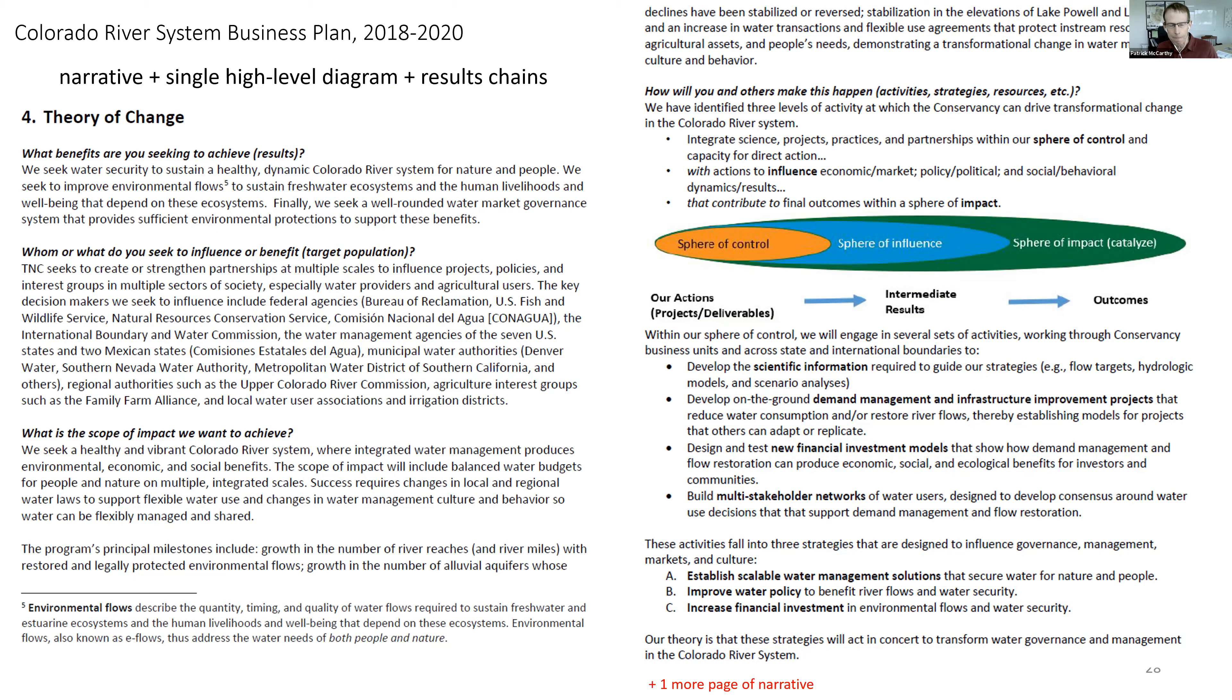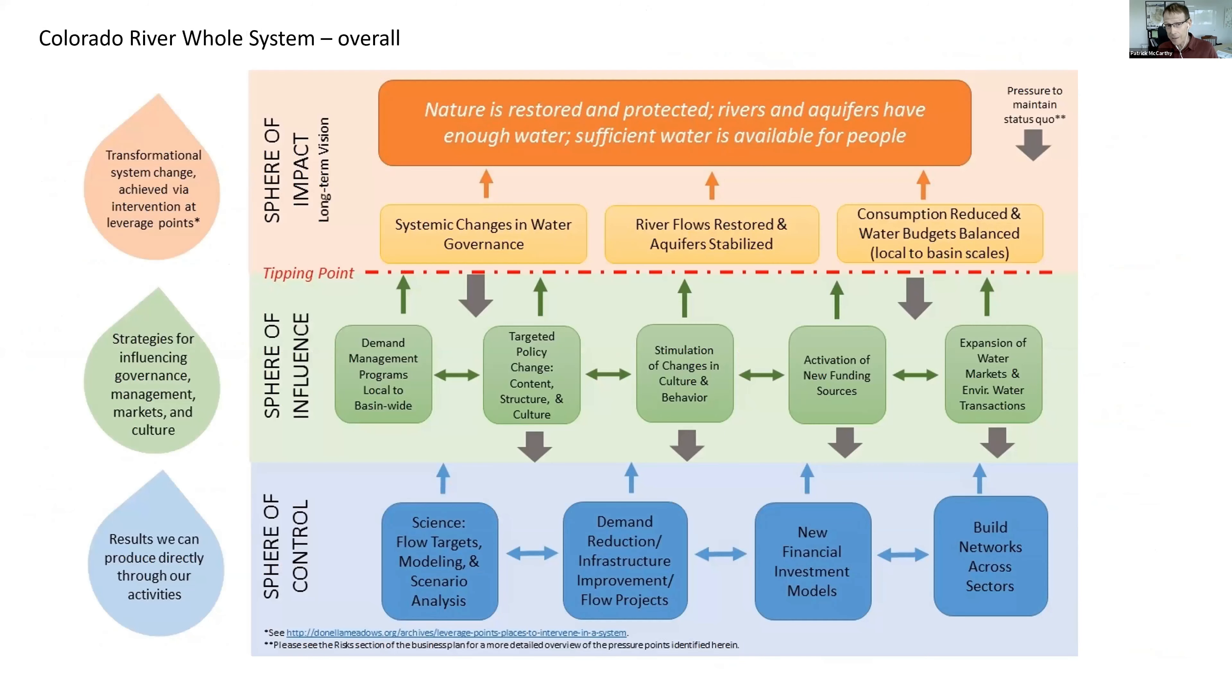That's one of the reasons we have a number of different modes or formats for working through a theory of change and developing measures with the large group that supports the Colorado River Program. We've got about 60 people all told who are supporting this work, who are involved in the business plan.